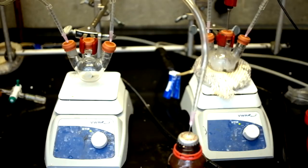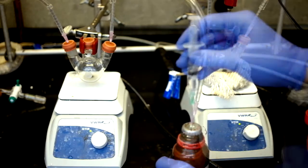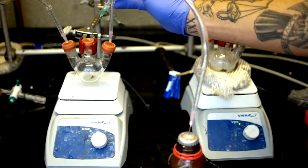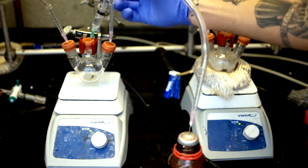First we need to put argon into the diethyl zinc flask. We can then inject 1.3 milliliters of diethyl zinc into the tellurium precursor and let mix for about 10 seconds.